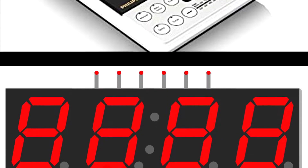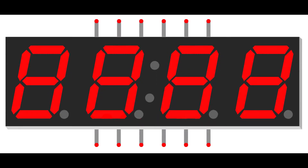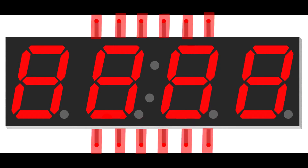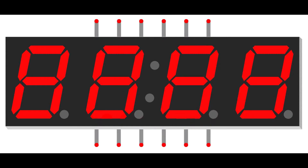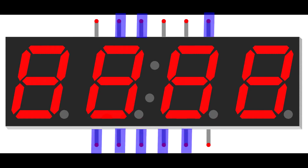This is the 4-digit 7-segment display interface. This segment display has 12 pins — 4 negative terminals and 8 positive terminals. Now let's set up the circuit.